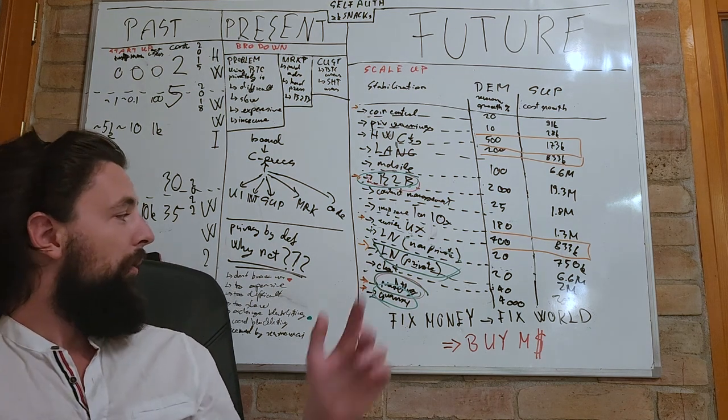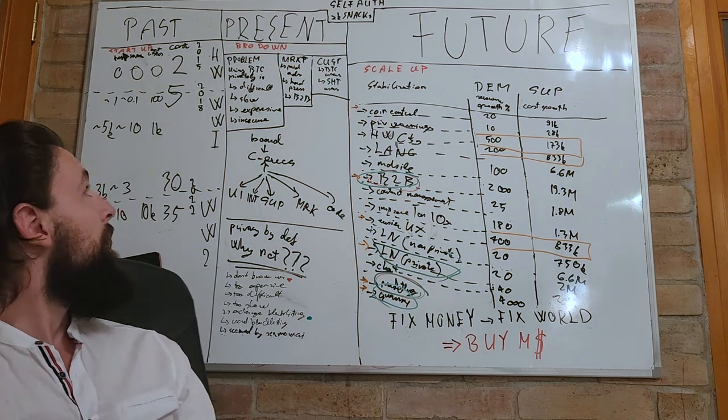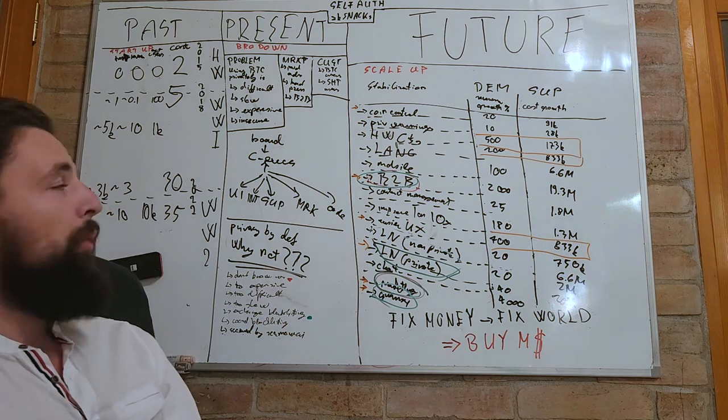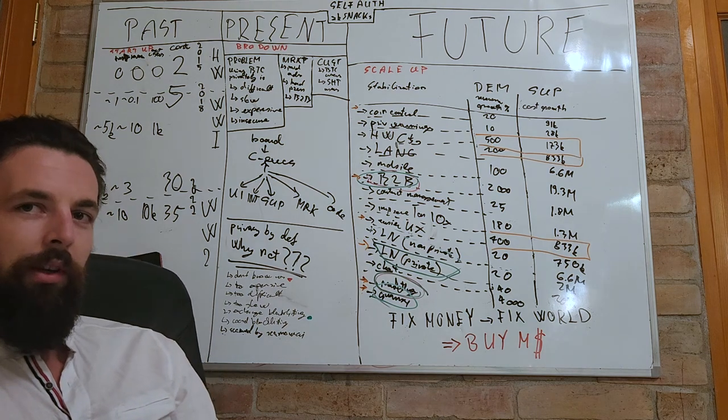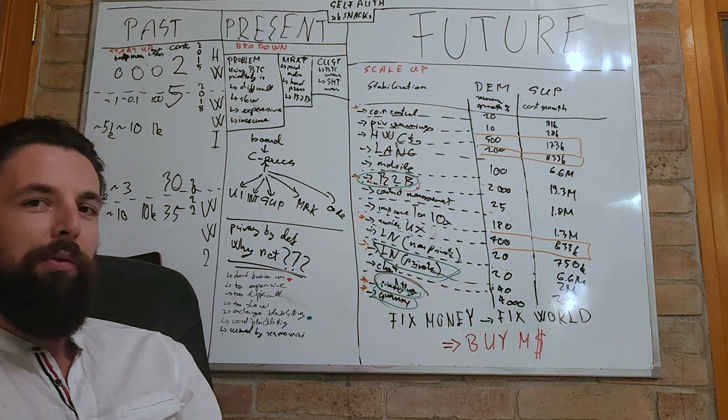And that's how we ultimately fix the money and fix the world. Just by making it easier, cheaper, faster and more secure to use money privately. Next we buy Microsoft. I guess just to sell it again later.